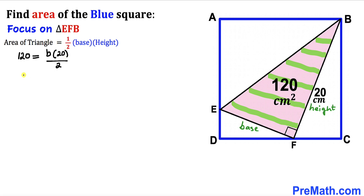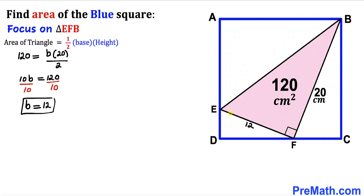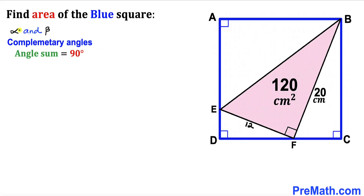Simplifying, we get 10 times B equals 120. Dividing both sides by 10, our base B turns out to be 12 centimeters. Therefore, side length EF is 12 centimeters.